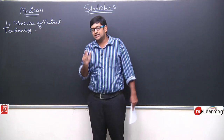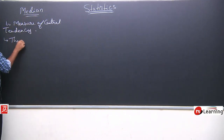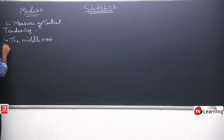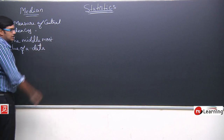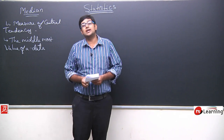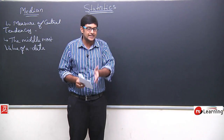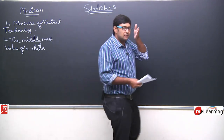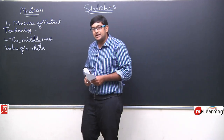As the term suggests, 'central' means in the center, in the middle. So median is basically the middle-most value of a set of data. The middle-most value will be known as the median. You have studied how to calculate the median of ungrouped data — you need to arrange it in ascending or descending order and then find the observation which is in the middle.